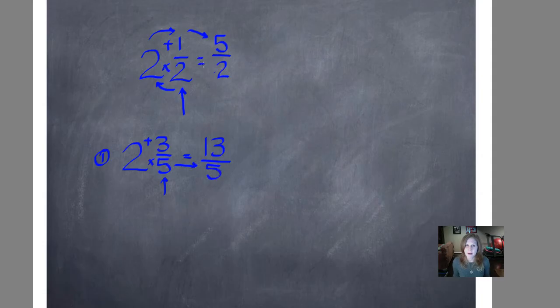I should have put an equal sign up here. There we go. So two and three-fifths, written as an improper fraction, is thirteen-fifths.